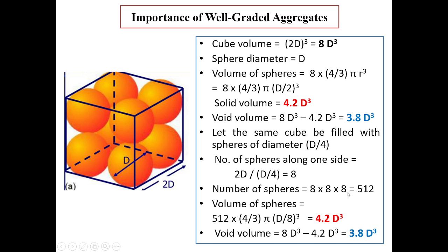That is along x, y, and z direction. I can fit 512 spheres each of diameter D/4 in a cube having dimensions 2D × 2D × 2D. And again here, similar to case 1, the volume of all the spheres will be 512 × (4/3)πr³. But r here is diameter/2. The diameter considered is D/4. Therefore, diameter/2 will be one half of D/4, that is D/8. Therefore, again the answer works out to be 4.2D³.